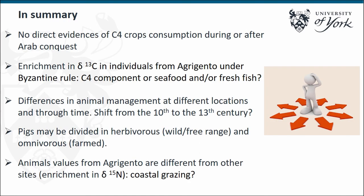In summary, so far I couldn't see direct evidence of C4 crops during or after the Arab conquest, but I want to carry out more analysis on that. I have already done carbonates on the Agrigento population and I'm planning to do compound-specific isotope analysis of amino acids. For the animals and humans at Agrigento, we can see an enrichment in Delta 13C under Byzantine rule, and we want to understand if this is due to a C4 component or a seafood component. We can also see different strategies in animal management at different locations, and possibly a shift from the 10th to the 13th century in the management of chickens.